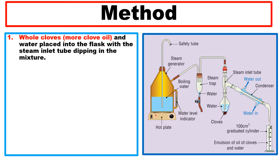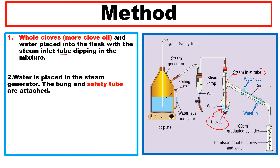Method step one: whole cloves and water are placed into the round-bottom flask, with the steam inlet tube dipping into the mixture below the water level. Water is placed in the steam generator and the bung and safety tube are attached.